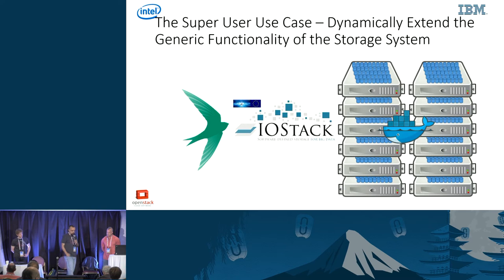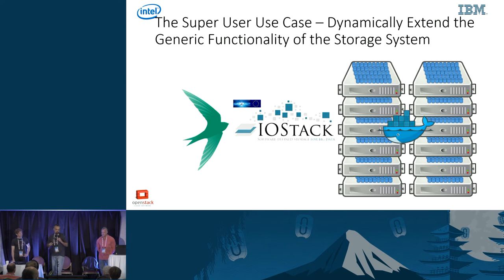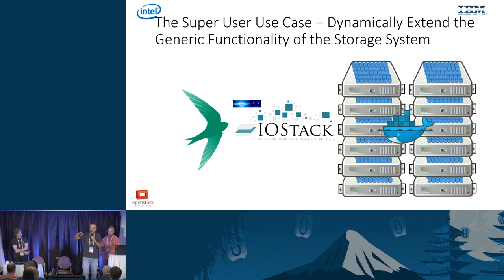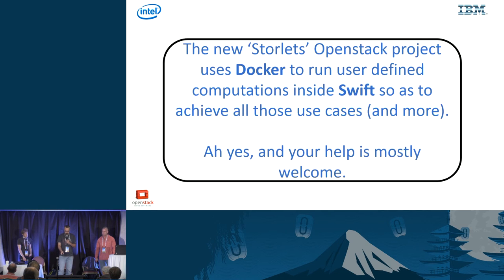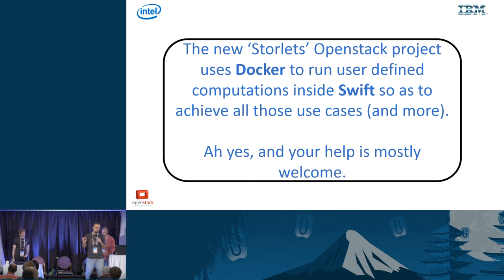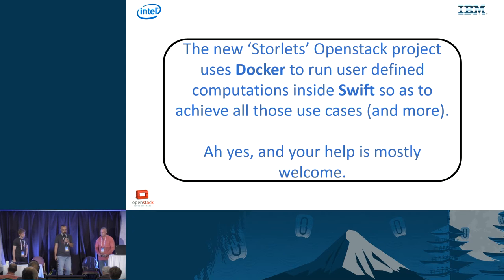This idea was taken further by a project called IoStack, a European project. They added a policy layer that says something like: every time there's a request from a user belonging to a certain account or tenant, do a compression or encrypt it — an automating layer to use those computations. Most importantly, all this stuff is now available as an OpenStack project on GitHub. Hamdi will talk about it, and any help is most welcome. I'll hand the mic to Paul.